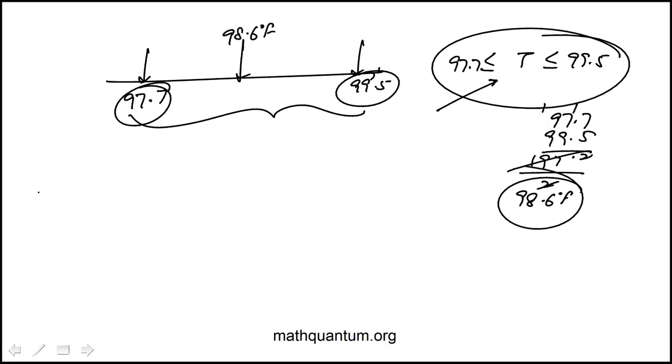Now T could be any value that's here or here. And the distance between T and the center, which we can write in absolute value form, that's the distance. That distance has to be less than half the total distance between these two, because it can go either side of the midpoint.